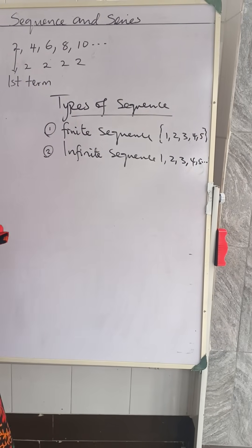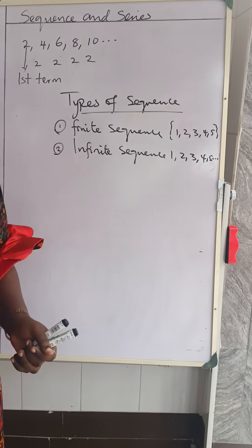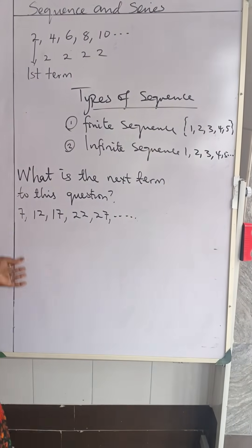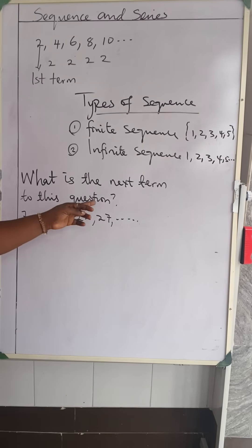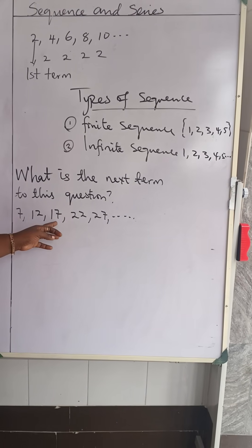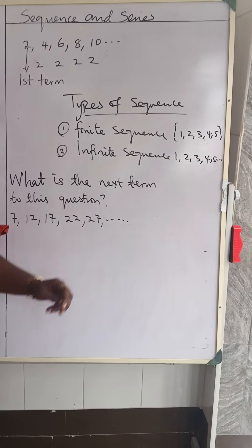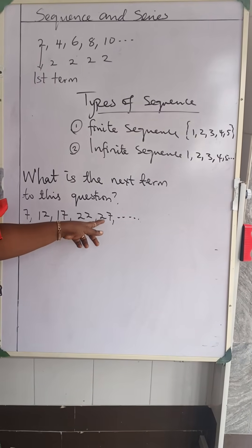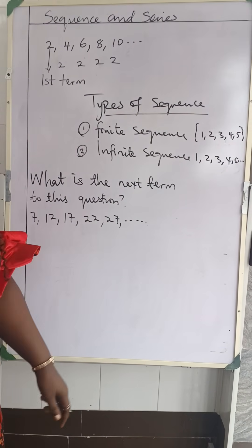Let's look at this question for you to give me the answer. What is the next term in this sequence? We have seven, twelve, seventeen, twenty-two, twenty-seven, and so on. We are asking you the next term — that is, after twenty-seven, what number should be there?